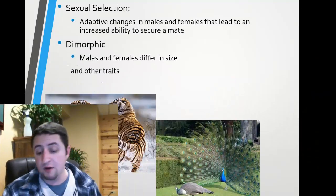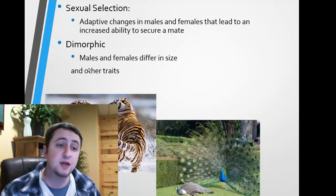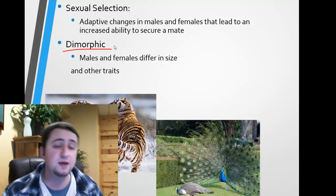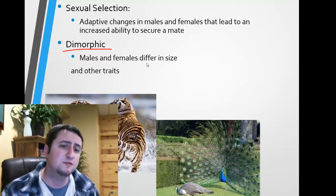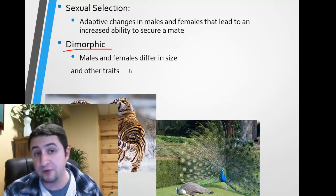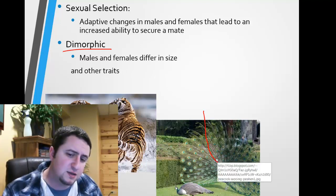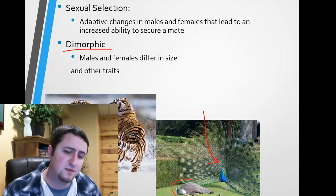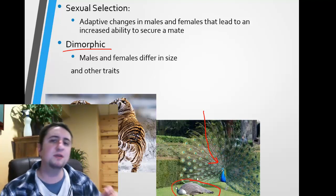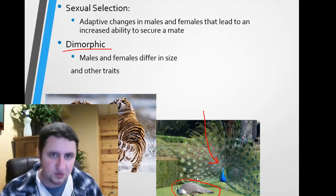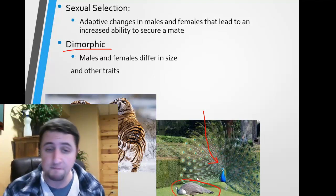We often find that organisms that practice sex selection are what we call dimorphic. If organisms are dimorphic, it means that the males and females are different within a certain species. If we look over here, this is a male peacock and this is the female peacock — peacocks are dimorphic. You can probably think of a lot of different examples of animals that are dimorphic; human beings certainly are one.